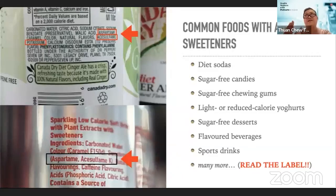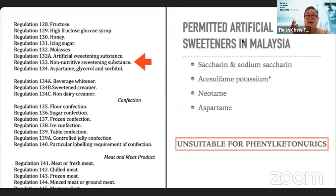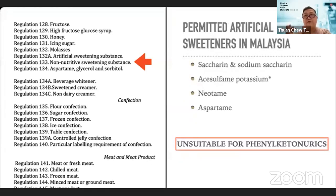Under Malaysian regulations, permitted artificial sweeteners include saccharin, acesulfame potassium, neotame, and aspartame — these four are listed and manufacturers can use them in food formulations. According to Food Regulation 105, when artificial sweeteners are added to food, a warning statement — 'not suitable for phenylketonurics' — must be included on the label.